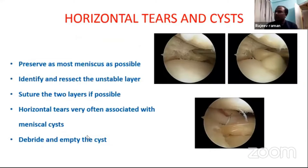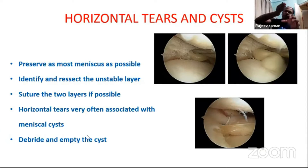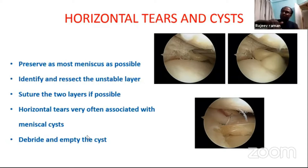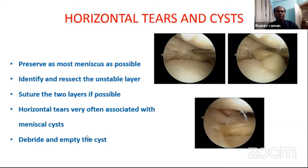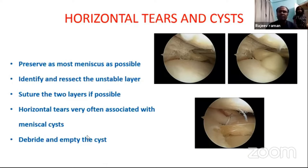Horizontal tear and cyst: most horizontal tears involve seepage of synovial fluid from the meniscus to the menisco-capsular junction, causing a meniscus cyst formation over the menisco-capsular junction. These cysts are quite painful, whether over the medial or lateral meniscus. Most of the time you try to debride this horizontal tear, but try to save as much of the meniscus as possible.